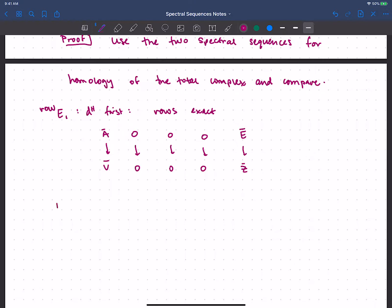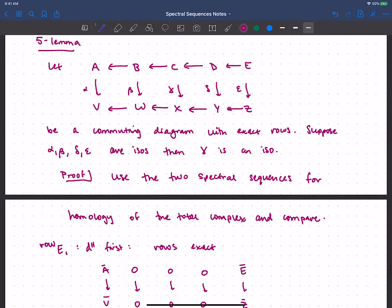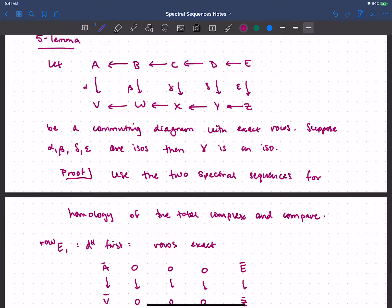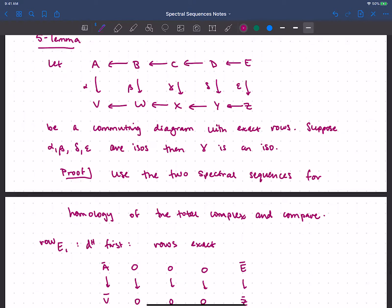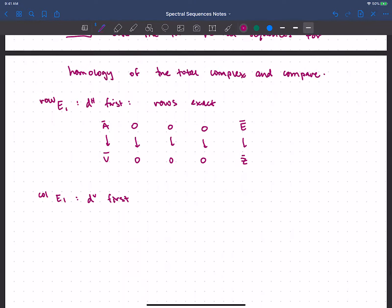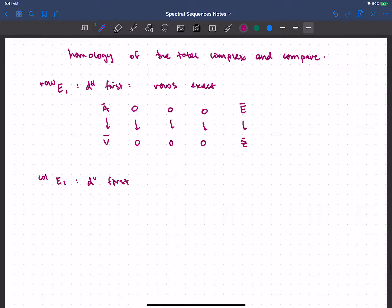So let's say that we did the column version. Then we would do the vertical maps and take homology with respect to those first. And now remember, the whole point here in the five lemma is that those vertical maps are mostly isomorphisms. The only questionable one is that middle one.